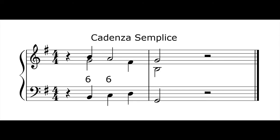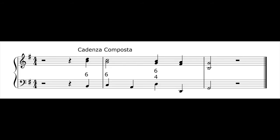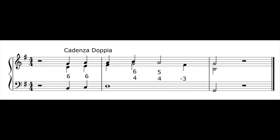In the simple cadence, the dominant chord moves straight onto the final tonic chord. In the compound cadence, there is time for a 6-4-5-3 hot cross buns combination before the final tonic chord. In the double cadence, the dominant sounds before the 6-4-5-3 combo is stretched by a 4-3 suspension leading to the final tonic chord.